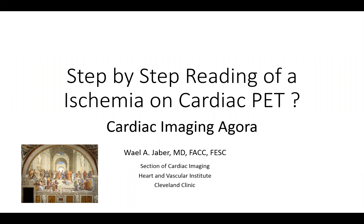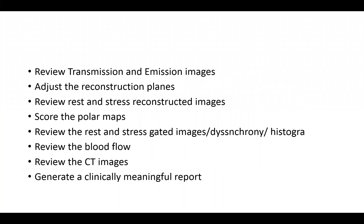Hello and welcome to another edition of Cardiac Imaging Agora. In this session we will analyze a PET ischemia study and try to correlate the finding of ischemia to some other not very uncommon pathology on ancillary imaging findings. We go back to our traditional checklist that we use every single time we read a perfusion study, whether PET or SPECT. In PET we add the myocardial blood flow, so if you follow this you will be able to generate a clinically meaningful report without missing important findings.